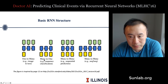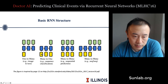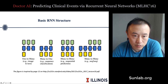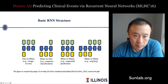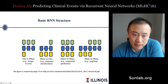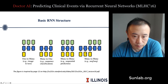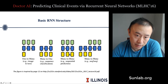You can have many-to-one applications for sequential classification — for example, multiple visits of a patient, and finally you predict the health status. Then we have many-to-many, which is sequential prediction — that's the setting of the paper I'm talking about today. At every visit you make a prediction about what's going to happen at the next visit.